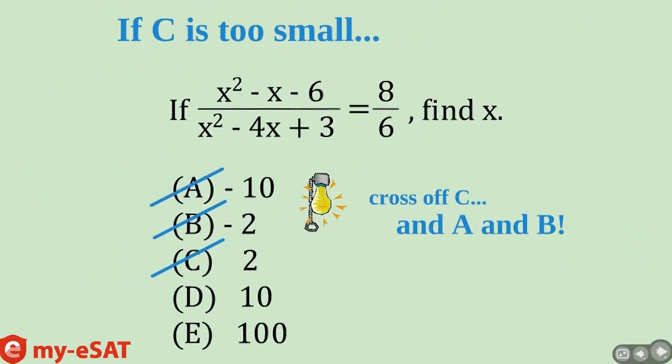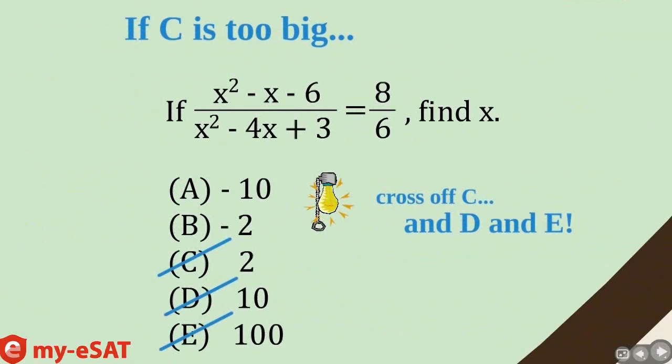If it doesn't work because it's too small, then you can cross off C and also you can cross off A and B. Wow! That's efficient! But what if C turns out to be too big? Well, then you could just cross off C as well as D and E.